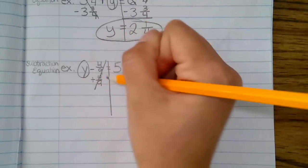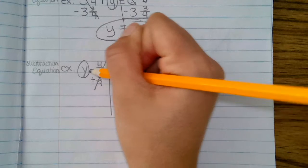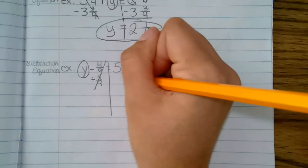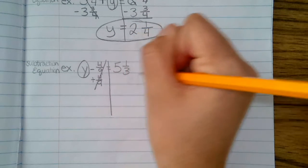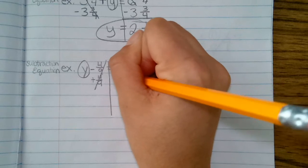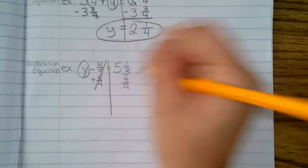So anything I do to the left side to isolate this, I have to do to the right side. So it is five and one third plus four ninths.